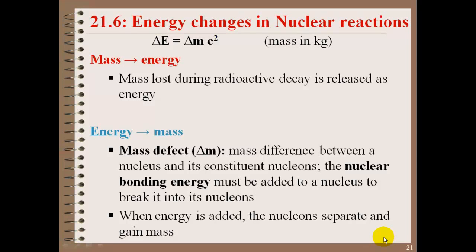The kilograms helps us get to joules as our unit. So the mass defect here, or the change in mass, is the difference between a nucleus and its nucleons. The nuclear bonding energy must be added to a nucleus to break it into its parts, its neutrons and its protons. When energy is added, the neutrons and protons separate, and they will gain mass.